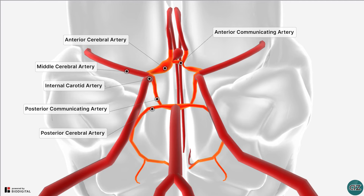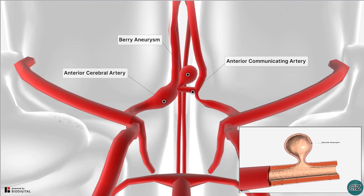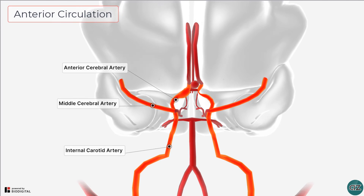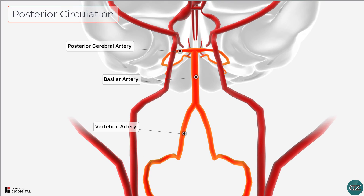Here you can see an aneurysm which is formed at the junction of the anterior cerebral artery and the anterior communicating artery. Like this aneurysm, the majority of berry aneurysms are located in the anterior circulation, which arises from the carotid system, with the minority found in the posterior circulation, which arises from the vertebro-basilar system.